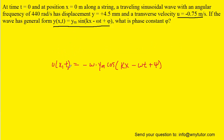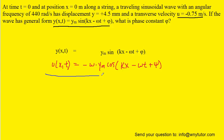Here is the final form of the velocity function. What we'll do is take the position function and stack it on top of our velocity function, and then perform a neat little algebraic trick whereby we divide the two equations.